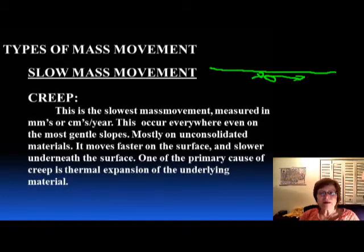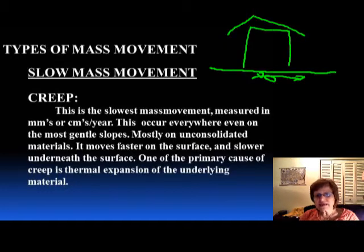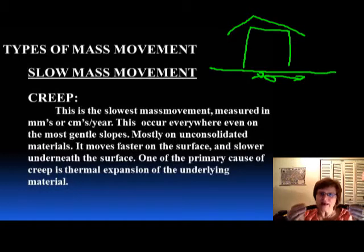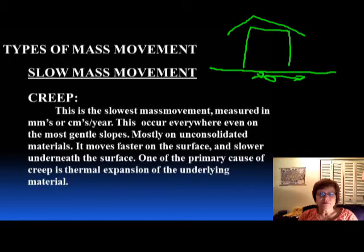The creep happens because the soil particles in the summer, when it's really hot, they expand and shrink. That makes the material on the slope move just a teeny tiny bit. But if you think about it, you have gas pipes and water pipes under the ground outside the house. When creep happens year to year, it can put pressure on the pipes and they can break, causing a lot of possible problems. The primary cause of creep is the thermal expansion of the underlying material.